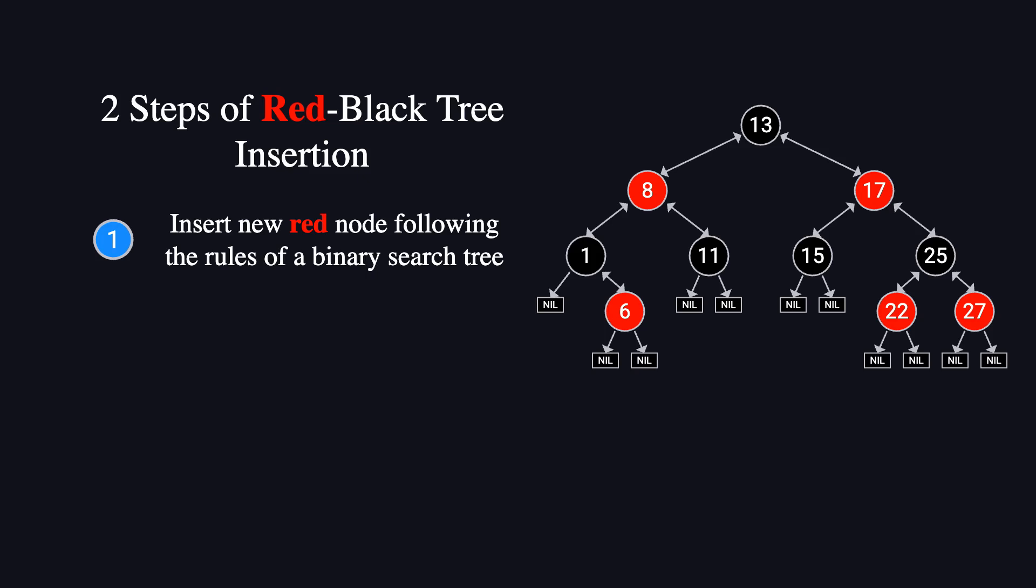If the new value is smaller, we go left. If it's larger, we go right, until we find the right spot and insert the node. This part follows the standard binary search tree rules, with one key difference. The newly inserted node is always red.